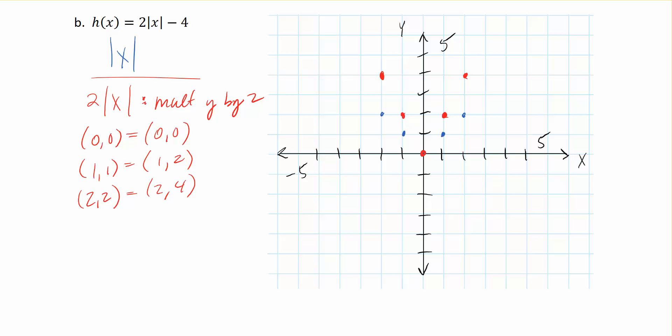Now the last thing we're going to handle is the negative 4. So the negative 4 is a vertical shift down by 4. So all of these red points are going to be shifted down by 4.